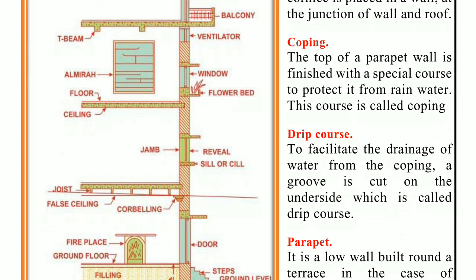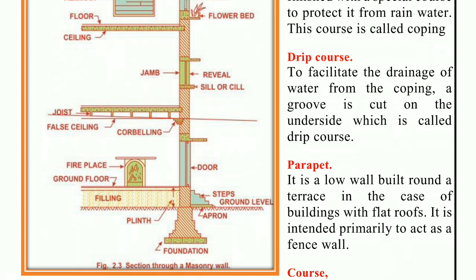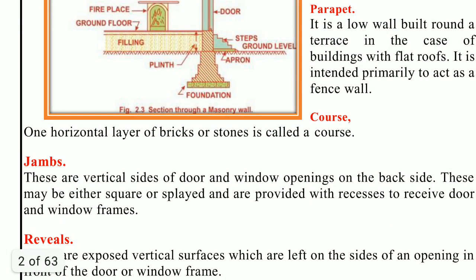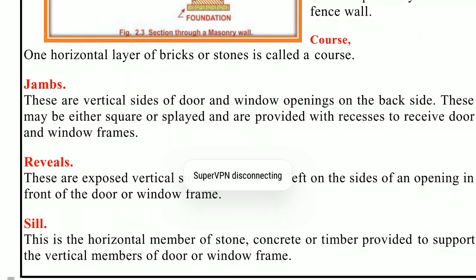Next, weathering — W-E-A-T-H-E-R-I-N-G. The upper surface of stone used for sills, cornice, and coping is dressed in a sloping way so that the water may flow off easily. This is termed as weathering. The term weathering is sometimes also used to denote the wearing of stone surface by the action of weather.